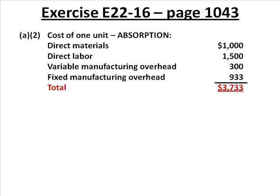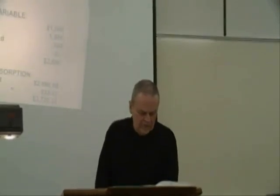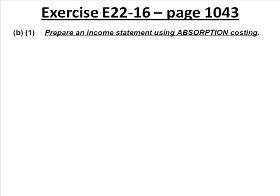Variable costing is the new way; absorption costing is the old way. Before we do the new way, I'd like to review the old way. I'm going to insert B1 before what the authors ask us to do — I'm going to ask that we review and prepare an absorption costing income statement first. Will you help me? Where should we begin?